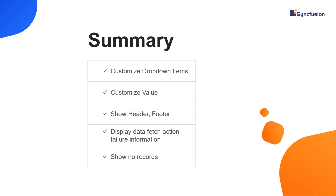That's it. Let me summarize the main points. I explained how to customize the appearance of dropdown items, values, header, footer, and finally I showed how to display data fetch action failure and no records information using templates. You can download this working example from the GitHub link in the video description below. You can also see about getting a free license key to use our Blazor products if you are eligible for our community license. If you found this video useful, click the like button and subscribe to our channel to get notifications about new videos. Thanks for watching.